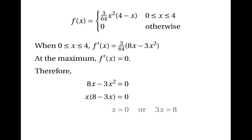The solutions are x = 0 and 3x = 8 — in other words, x = 2⅔. Clearly, x = 2⅔ is the x-coordinate of the maximum point on the graph, so the mode here is 2⅔.